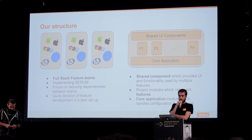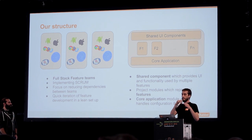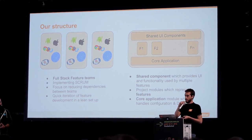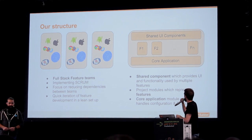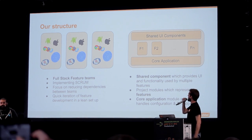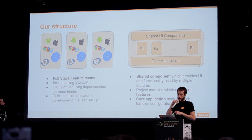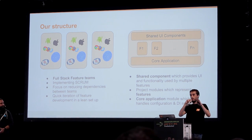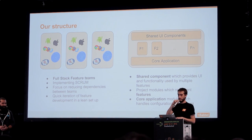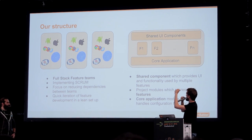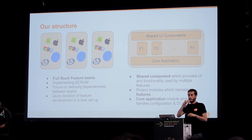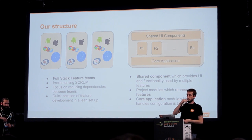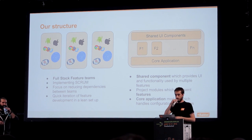We asked ourselves how we can actually help the teams develop if we're going to have a new application that can be split. As an overview, we have our new app. There's a shared component that offers the UI widgets and also the common functionality. All the features are split across the modules. And then we have a core application that orchestrates all these modules and the dependency injection scopes.